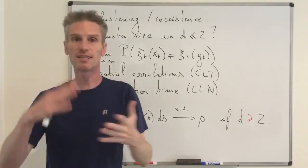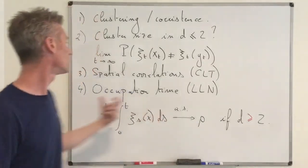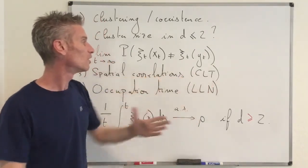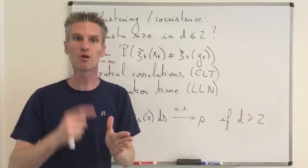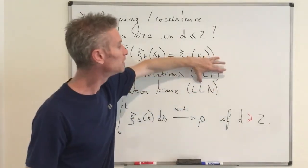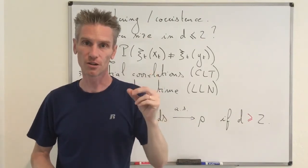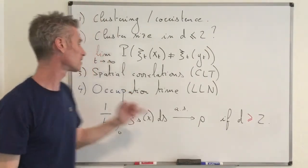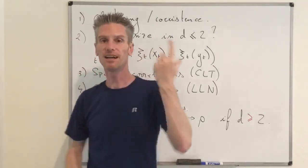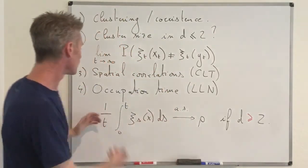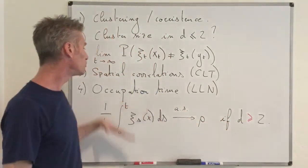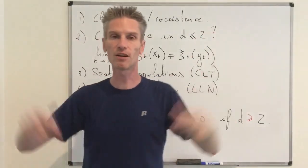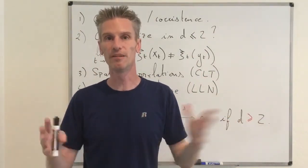Third, regarding spatial correlations under the invariant measure in dimension three or more: even in the coexistence phase, spatial correlations are very strong — shown by the fact that in the central limit theorem we must add 2 to the dimension to get a non-degenerate limit. Fourth, regarding occupation time: we have a law of large numbers even in dimension two, which combined with the fluctuation result tells us that in one and two dimensions, clusters keep growing forever but also move around quite a lot.